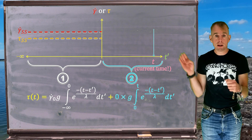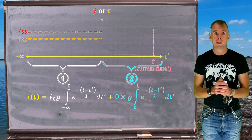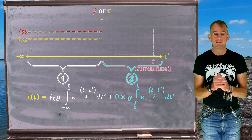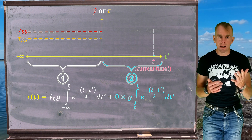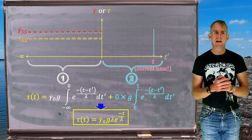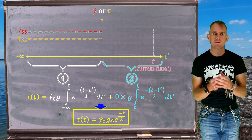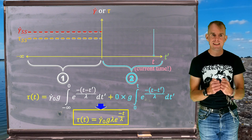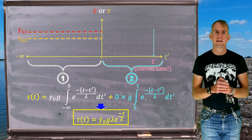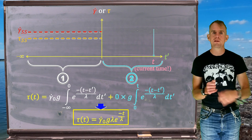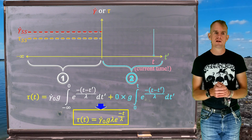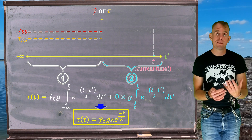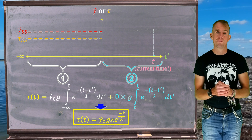Looking at the first integral only, current time t features in the exponential. Performing the integration and applying limits, we get the result that my stress now, τ(t), is the exponential decay governed by the relaxation time — exactly the same as what we obtained with the differential form of Maxwell.